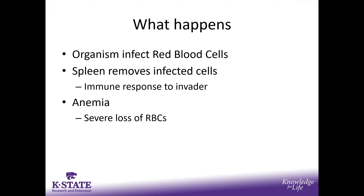Unfortunately, the immune system can be so strong against this organism that it will pull so many red blood cells out of the system that the animal develops anemia — very low red blood cells. The animals lose their ability to carry oxygen; they become hypoxic, with very low oxygen levels in the blood. They just don't have the carrying capacity anymore. That's where we see some of the clinical signs of anaplasmosis.